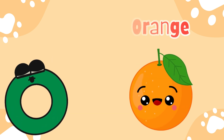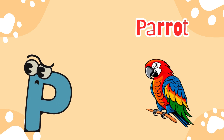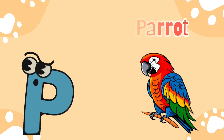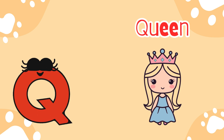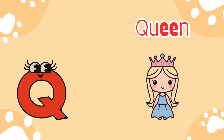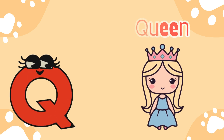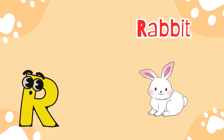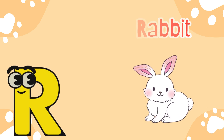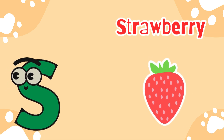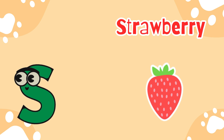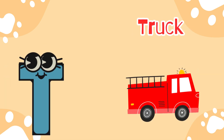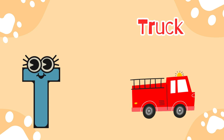P is for parrot. Q is for queen. R is for rabbit. S is for strawberry. T is for truck.